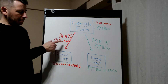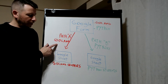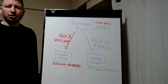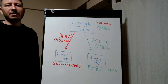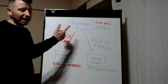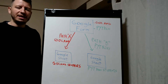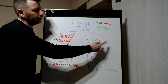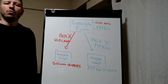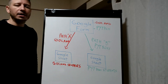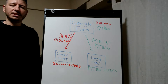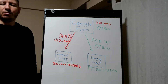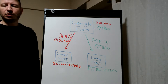In Path A we are going to store in a Google Sheet all the information regarding the students that selected Golang as the language they want to learn, and in Path B we are going to store in a Google Sheet the data of the students that selected Python.